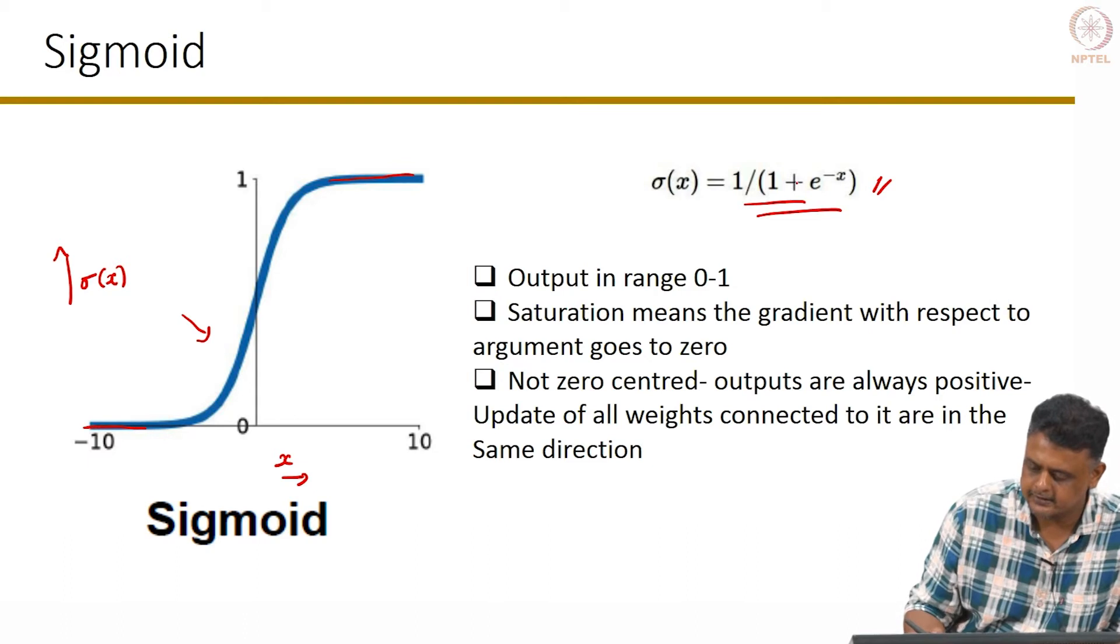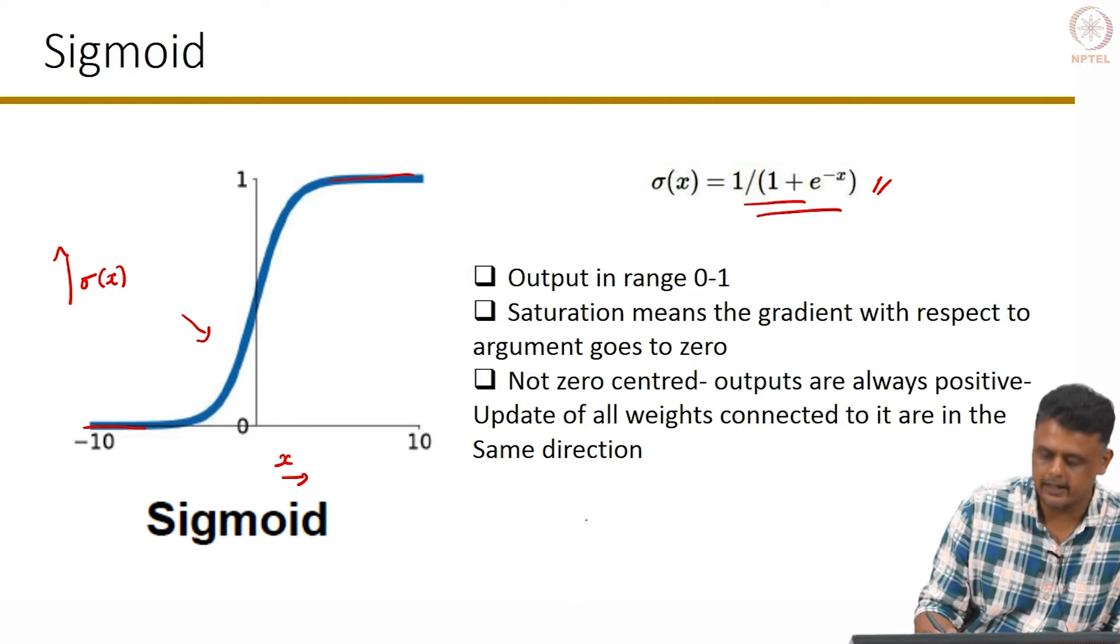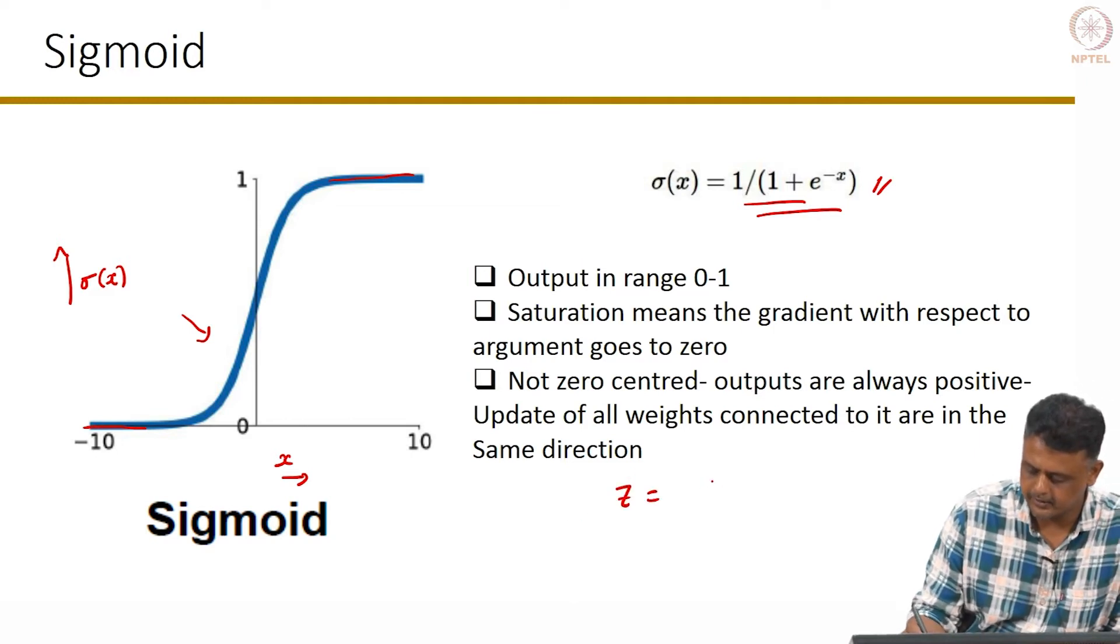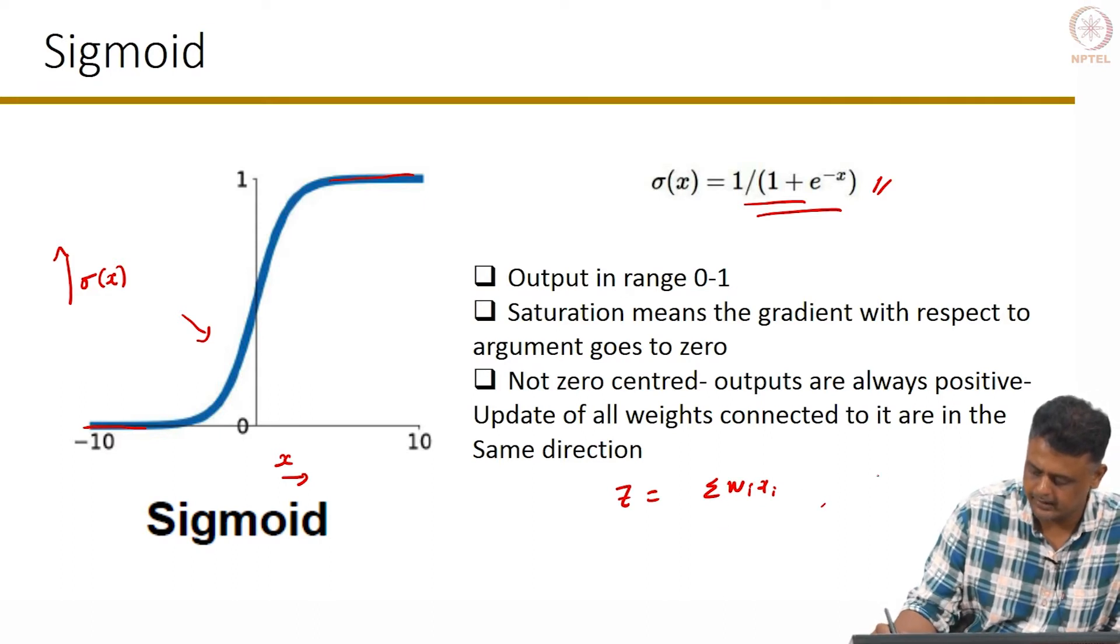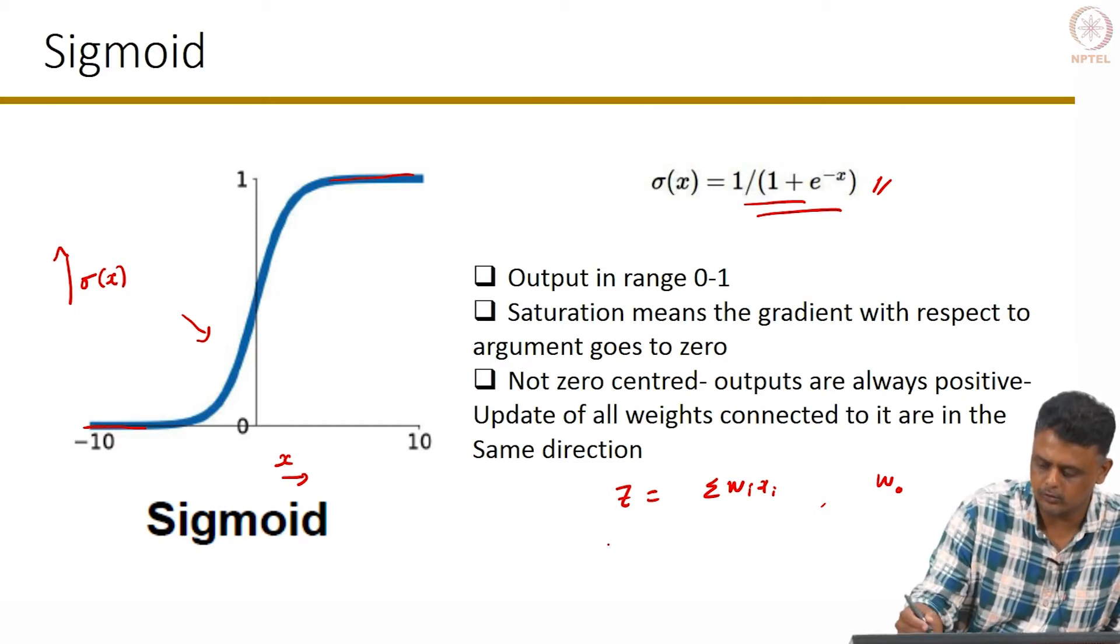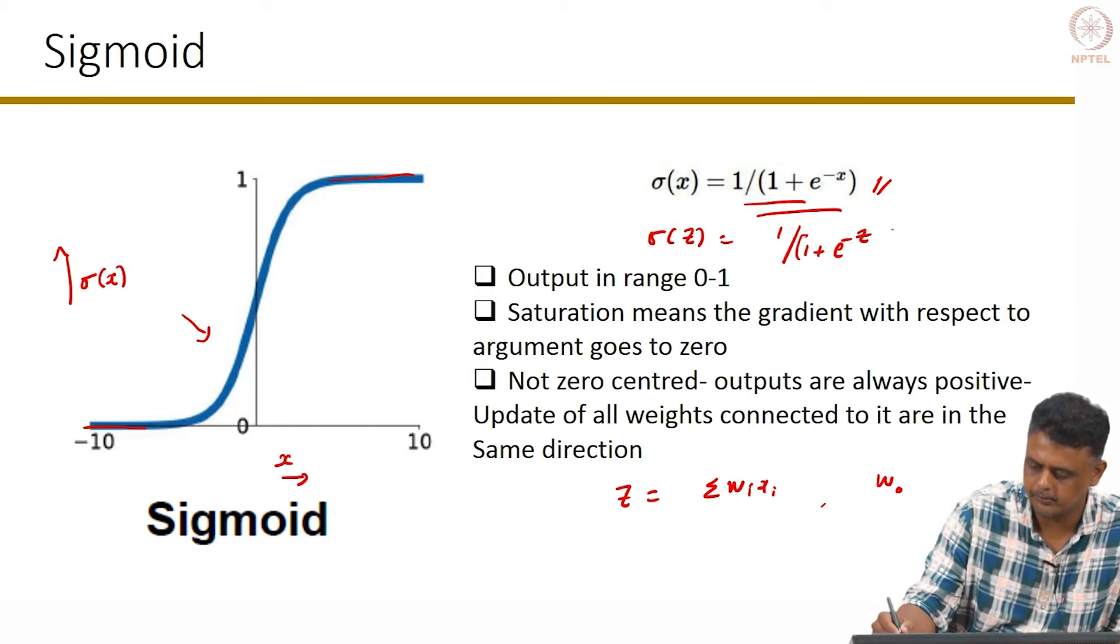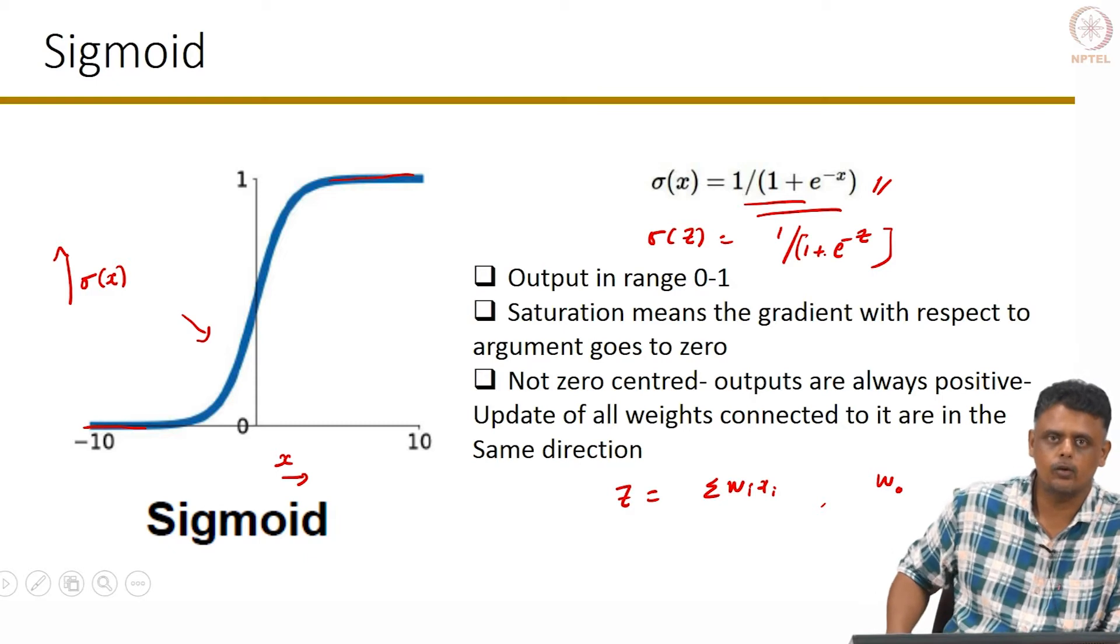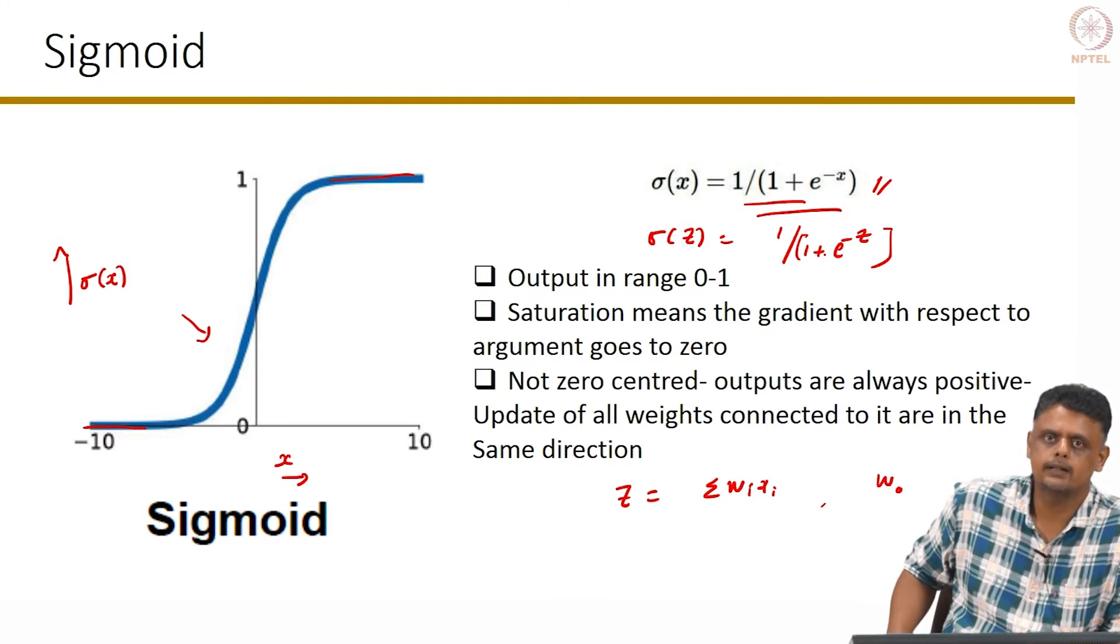In these slides I have used x, but typically the input to the nonlinearity is your z, which is summation wi xi. There is a w0 which is a bias term also coming in. You can also rewrite this as sigma z, just so that you do not get confused when you see us using z in a later lecture. The input to the sigmoid function is the linear combination of your input features with the weights.